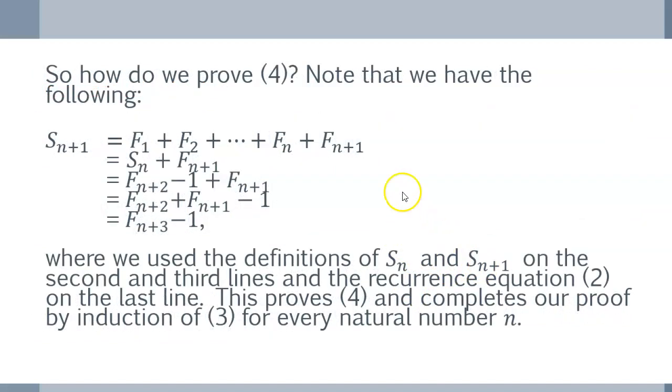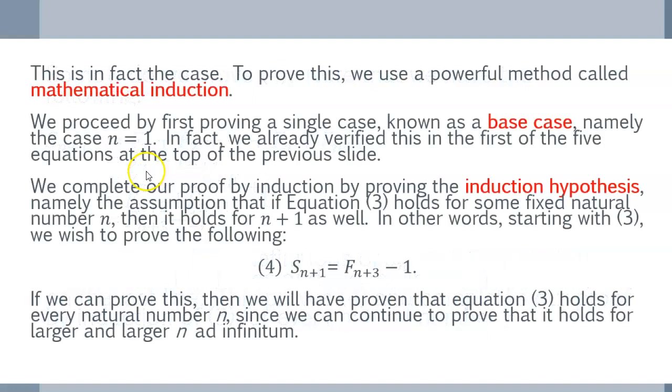So, let's do that. Well, how do we do it? Well, we start with the definition of Sn plus 1. This is the sum of the first n plus 1. Fibonacci numbers, F1 plus F2, up to Fn plus 1. And if you notice, the first n numbers in these sums is just what we call Sn. And so, we have Sn plus the thing that's left over, Fn plus 1.